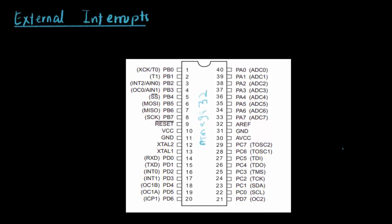In the last few videos we have been speaking about timers and interrupts. In this video we'll be talking about external interrupts. Depending on the IC or microcontroller you have, the number of external interrupts varies. On the ATmega32 we have three interrupts: on pin 23, port D2 we have interrupt 0, port D3 we have interrupt 1, and there is one more interrupt on port B2.